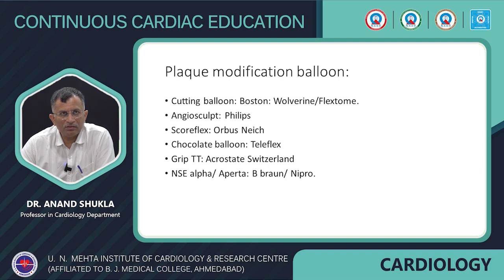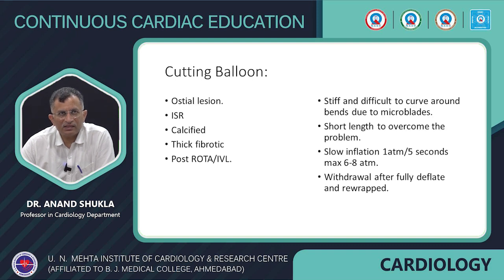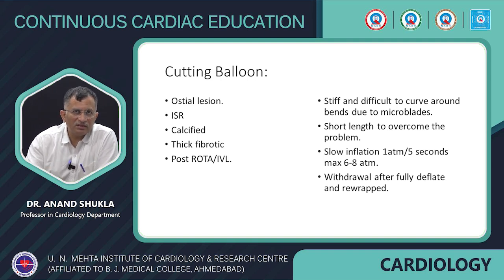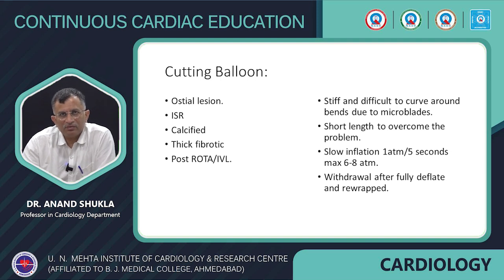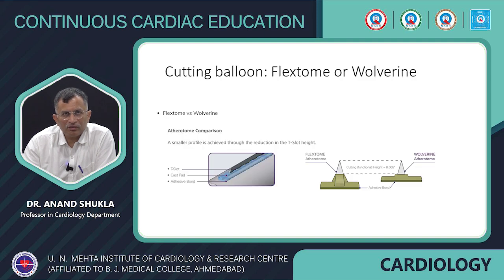Now coming to plaque modification balloons. There is the cutting balloon, angiosculpt, and scoreflex — the first three are available. The last three (chocolate, Grip TT, NSE Alpha) are available internationally but not in India. The cutting balloon is used for ostial lesions, ISR, calcified fibrotic lesions, and post-rota or IVL. The distal tip is stiff because of the blade, making it difficult to navigate around vessel bends, which is why they are made in short lengths. Technique: slow inflation at 1 atm per 5 seconds; maximum 6–8 atm nominal; RBP around 12 atm. Withdraw only after fully deflating and re-wrapping. Boston Scientific has redesigned the cutting balloon to reduce the crossing profile by removing the T-slot in the wall bearing.